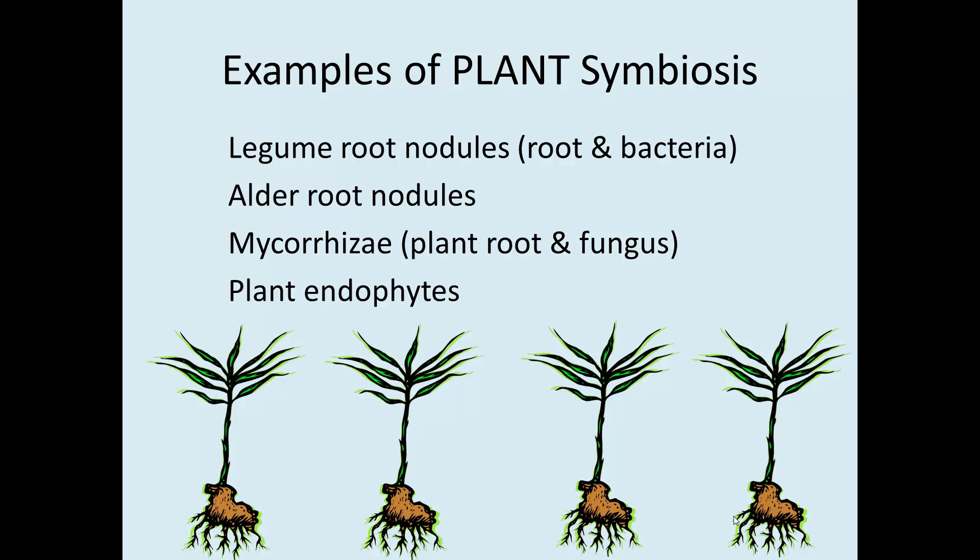Some examples of plant symbiosis: legume root nodules are very important worldwide — a novel relationship between the root of the legume and bacterial partners that set up home and help form the nodule. Alder trees have similar nodules with a different kind of bacteria. Mycorrhizae is the name for what forms below ground when plant roots and fungus form a symbiotic relationship. Additionally, there are plant endophytes, which are fungal partners on and in plant leaves — between the cells — that confer some positive benefits.